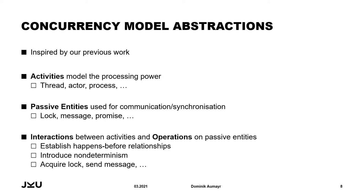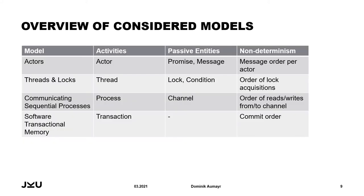We also have interactions that are performed by activities. Activities can interact either with other activities or perform an operation on a passive entity. These interactions and operations establish happens-before relationships, which are the sources of non-determinism in different concurrency models. Examples include acquiring a lock or sending a message to an actor. In the table on this slide, you can see an overview of the four concurrency models analyzed for this paper. In the actor model, which we use as an example, actors are the activities, and promises and messages are passive entities. The non-determinism in the actor model is mainly in the order of messages processed by the actor.